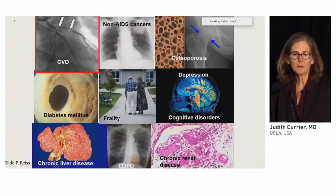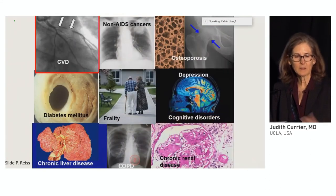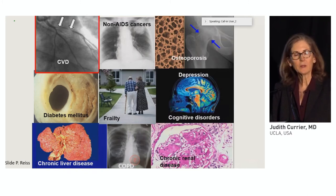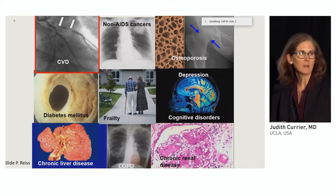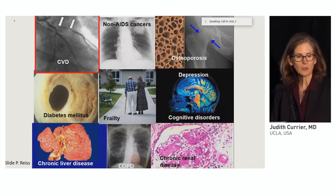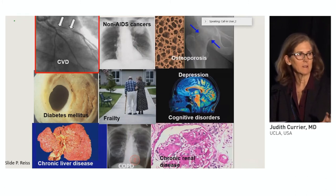This is a slide from Peter Rice that's probably 10 years old now, that highlights the spectrum of comorbidities and non-AIDS complications that we've seen at increased rates with people living with HIV. Some of these are further augmented for women, and I assure you that the tissues and cells and organs on this slide are from women.